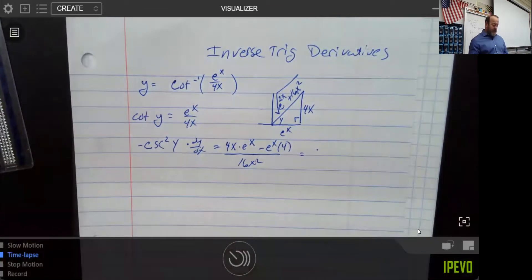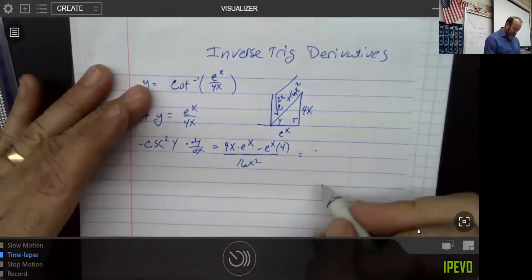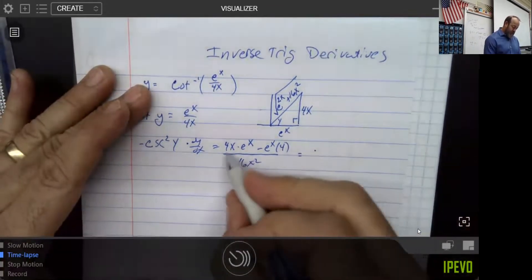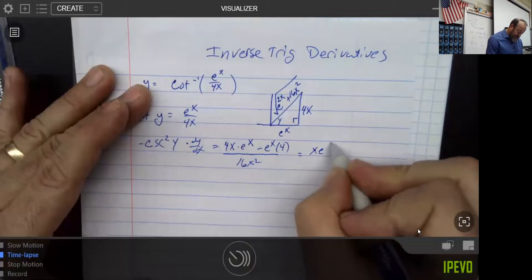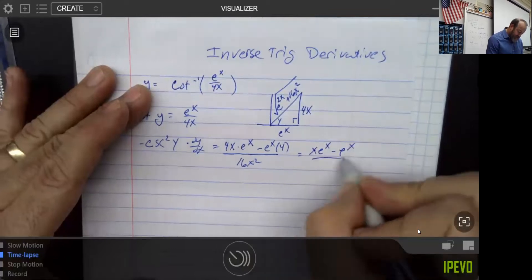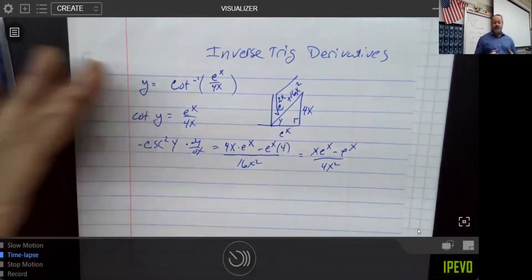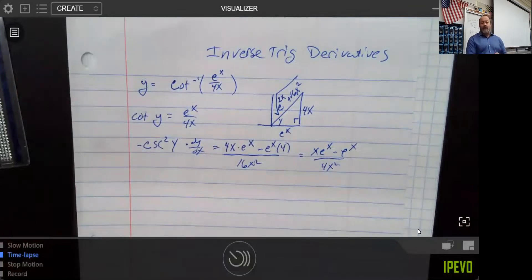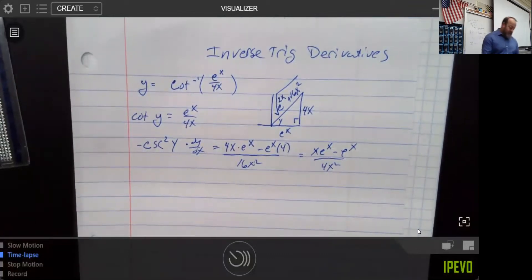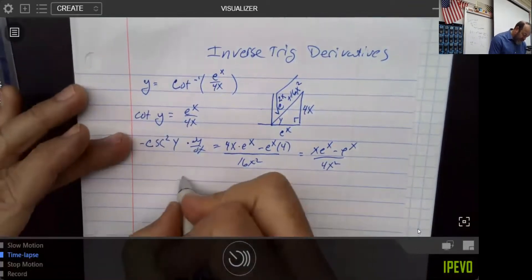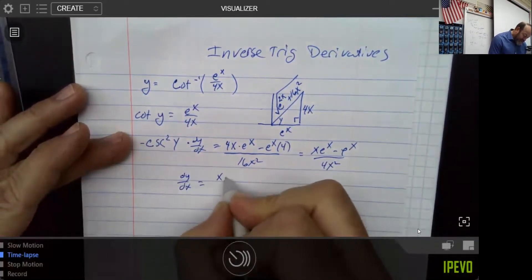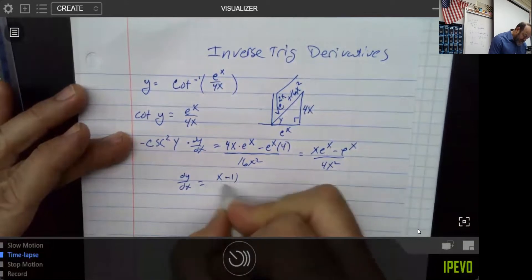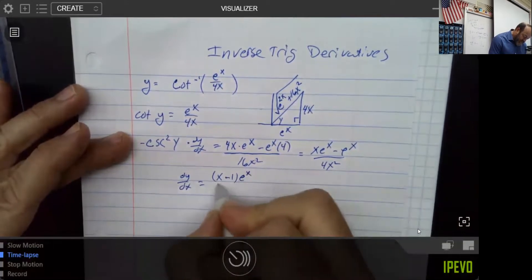I usually, if I can simplify things ever so slightly, I would. I notice that everything here has a 4 in it, so I could take the 4 out, and I'd have x e to the x minus e to the x over 4x squared, and that's probably sufficient. I could factor an e to the x out as well, but it's probably fine to do it as we have. So, to finish up my story, I have x minus 1 times e to the x over 4x squared.